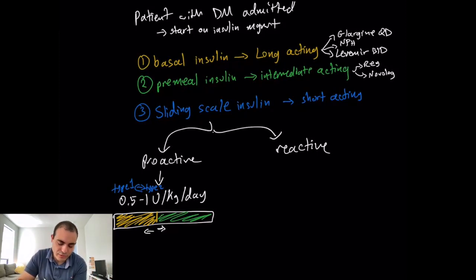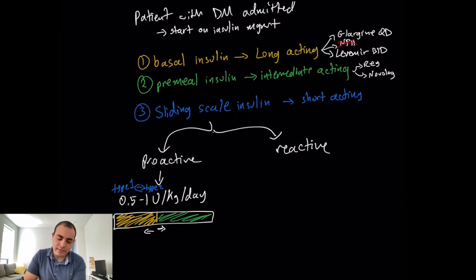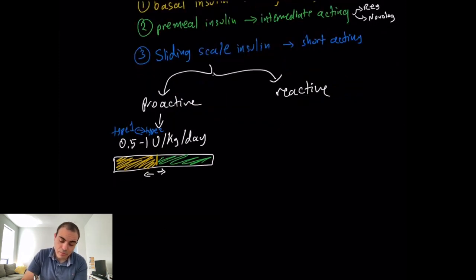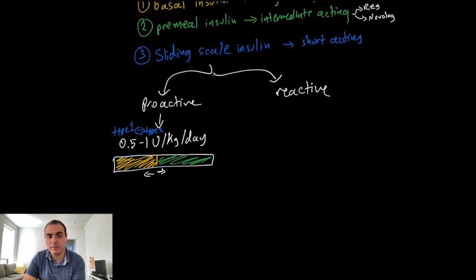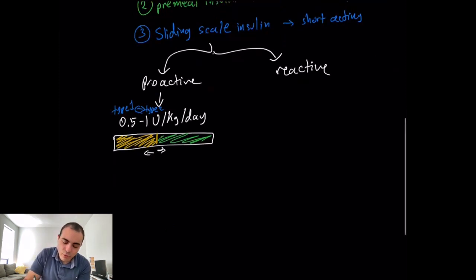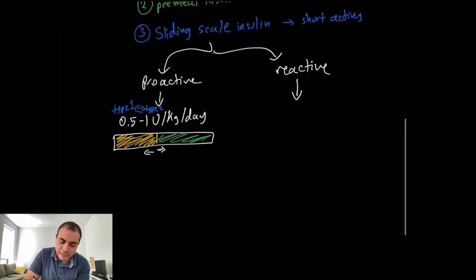There's also NPH insulin, a 70/30 mixture of basal and other components, but we never use it in the hospital — that's an outpatient medication. In practice, most clinicians go the reactive route with a sliding scale because it's simply easier.